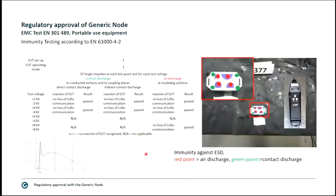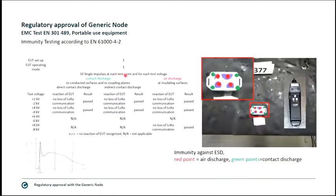The Generic Node passed ESD testing. Testing uses 10 single impulses at each test point, for each test voltage, and for each polarity — so it is not a one-time shot but 10 shots per voltage and per polarity.